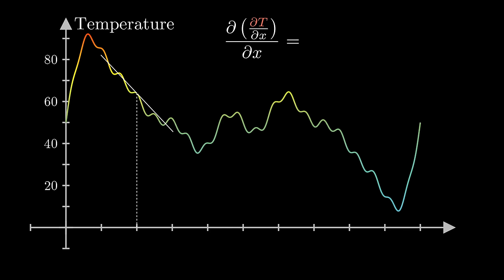Now in calculus land, we write this as del squared T over del x squared, the second partial derivative of our function with respect to x. Notice how the slope increases at points where the graph curves upwards, meaning the rate of change of the rate of change is positive.